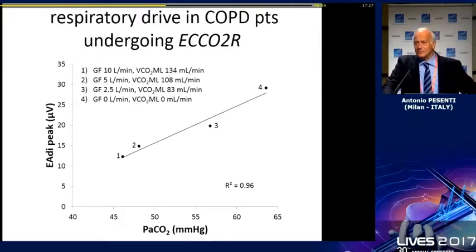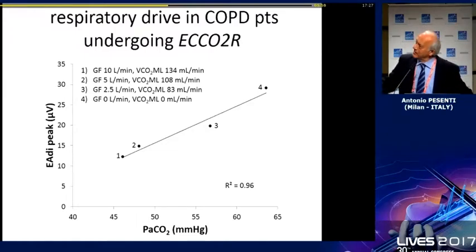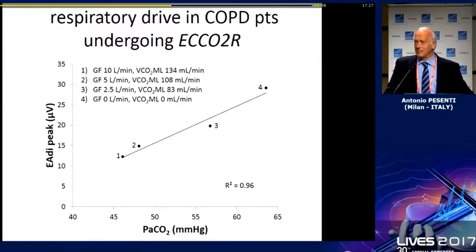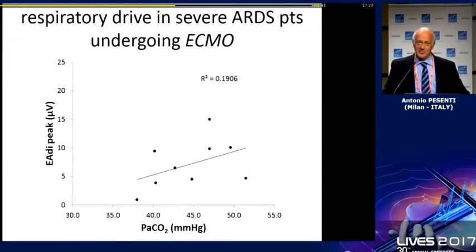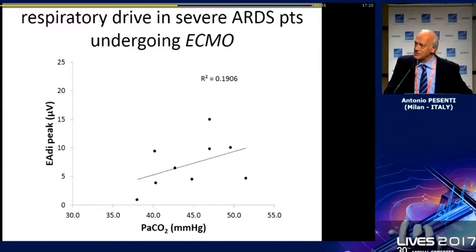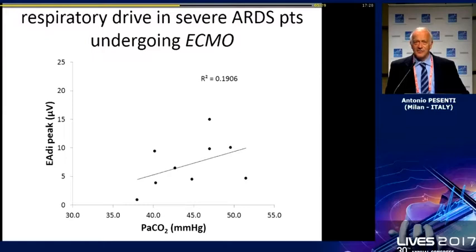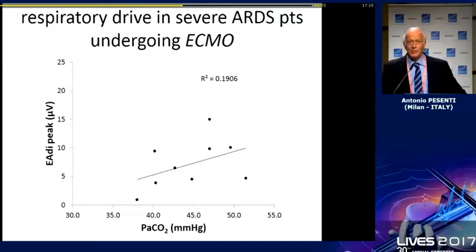Controlling drive is very easy in COPD patients and in recovering ARDS patients, as the data has shown. But if you look at severe ARDS patients in the acute phase, the line is not as good, because the respiratory drive in severe ARDS is very high and it is very difficult to control the drive just by changing the blood gases.